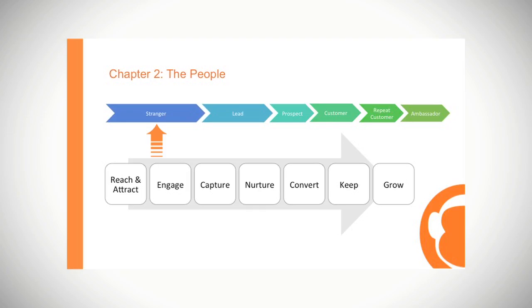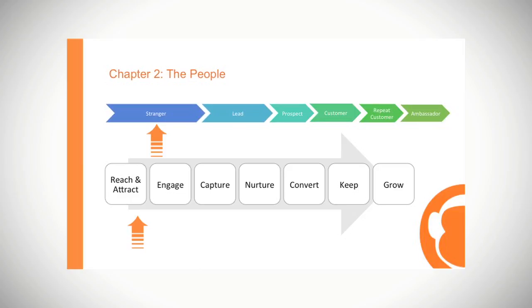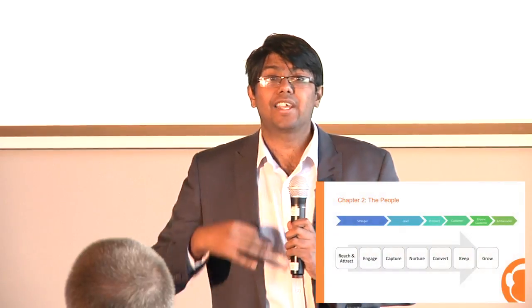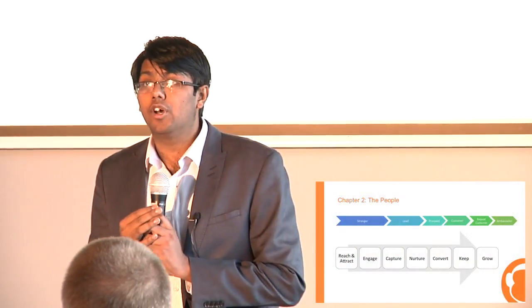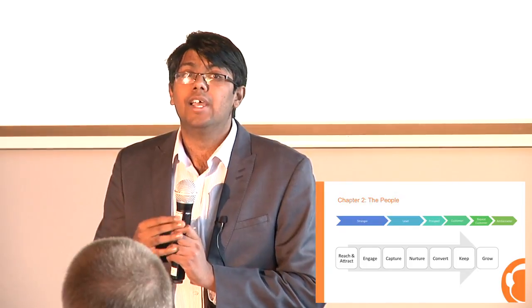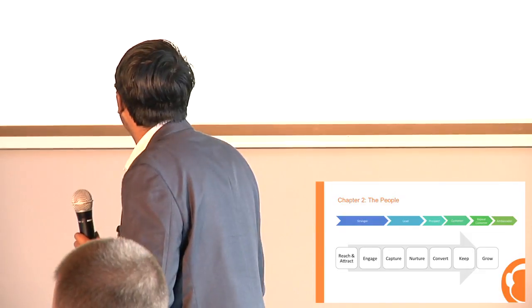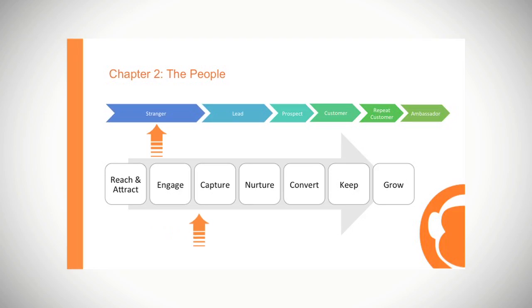Initially they don't know anything about you and you don't know anything about them. There's this big phase from reach and attract to engage where they are just strangers. After that, once they are convinced that the information you have is valuable for them, that's when they are happy to share their email or some form of contact details — that's the first point of contact when you know who they are.